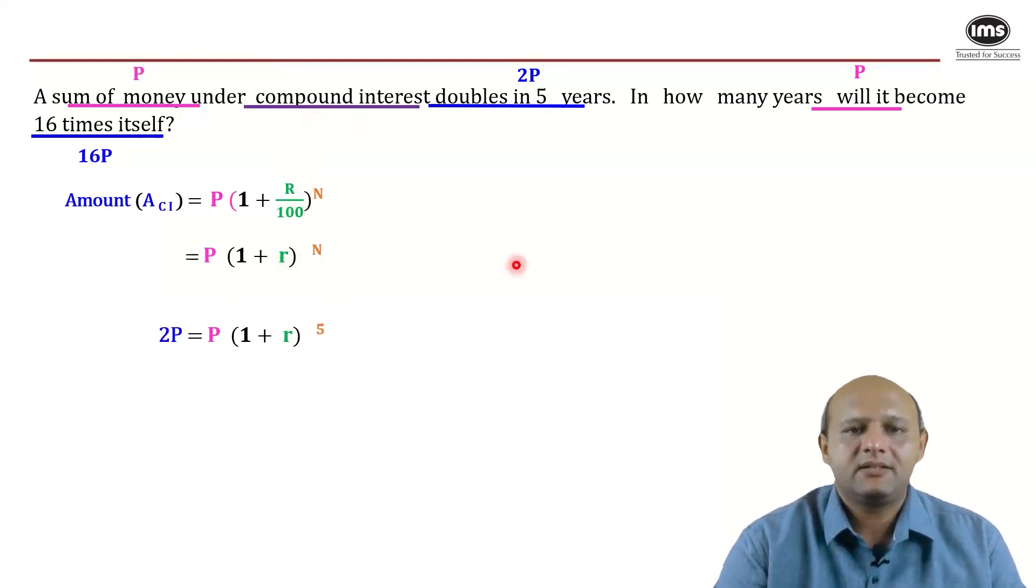Now if you input the data given, the sum becomes twice, so therefore 2P = P × (1 + r) raised to 5. It becomes twice in five years, so P cancels from both sides.